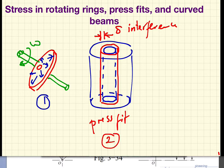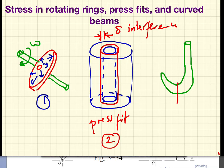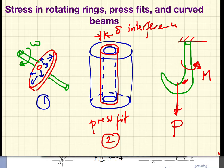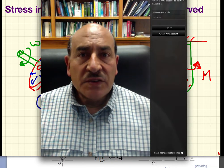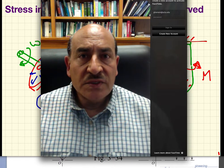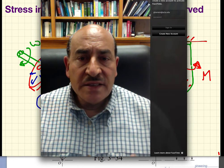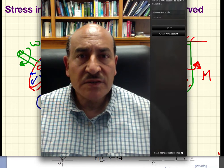Application three is a curved beam. An example of a curved beam would be a crane with a hook: a force acts downward on the hook, causing a bending moment on the shaft of the crane and stresses at different locations of that crane hook. We will look at this as bending of a beam, but the beam has a curved cross section.